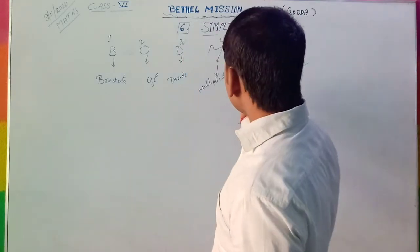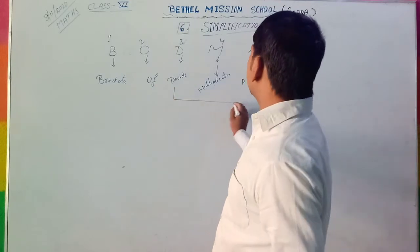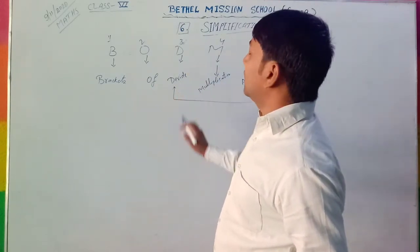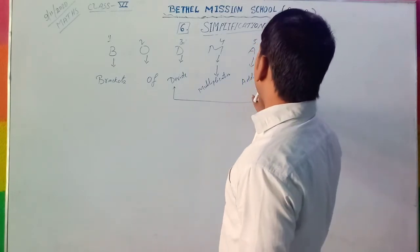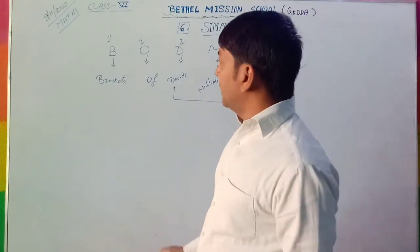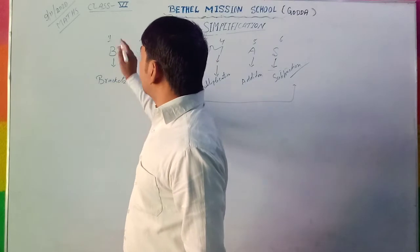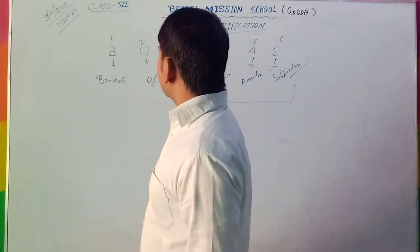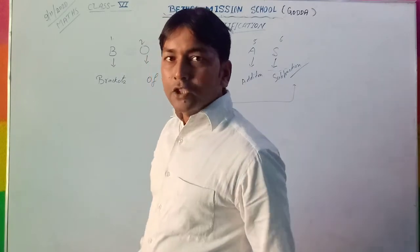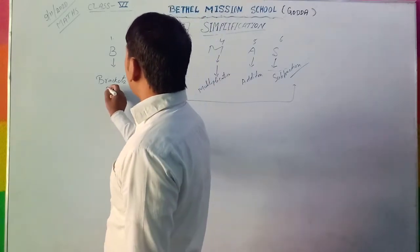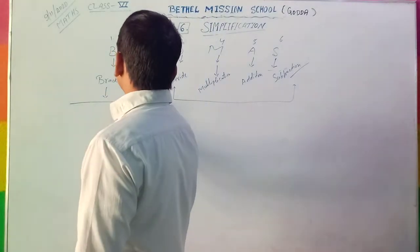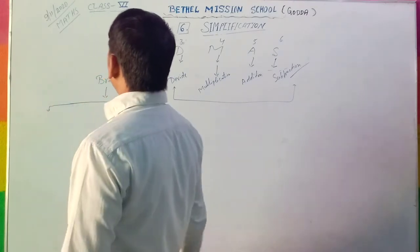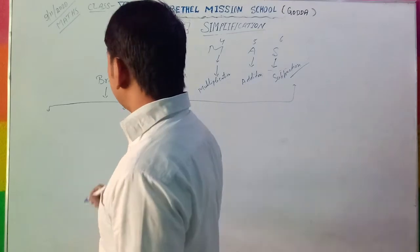In fifth class you used these four mathematical symbols: division, multiplication, addition, and subtraction. Here you have to learn brackets and off. So first, we learn how many types of brackets there are. There are four types of brackets.